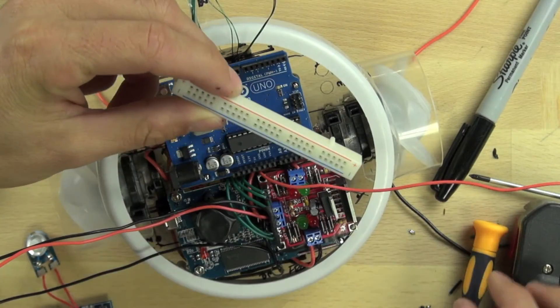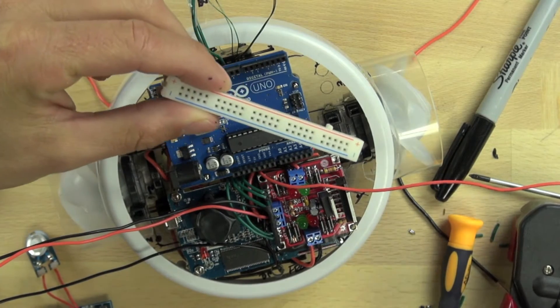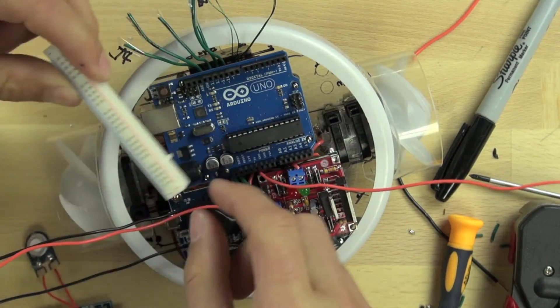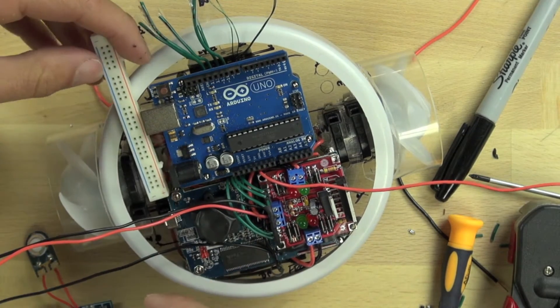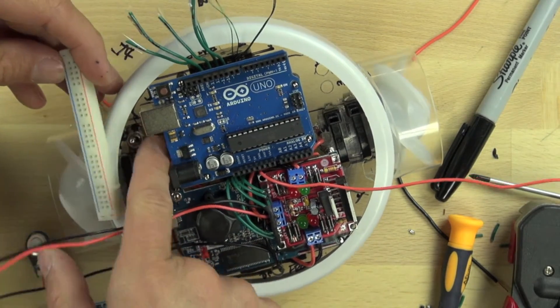So we're going to trim down our power strip, which is part of the breadboard, we're going to cut it, I think right here, so that we can fit it in front of the Arduino and connect it to the surface here.